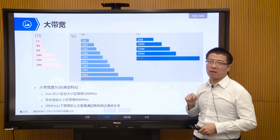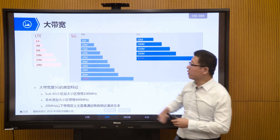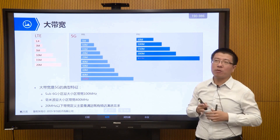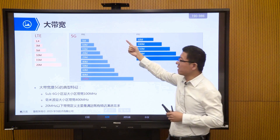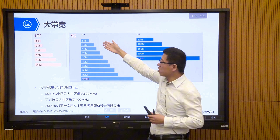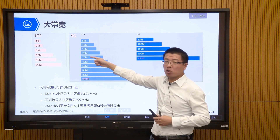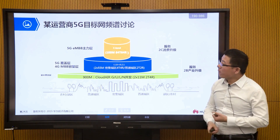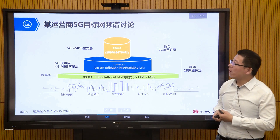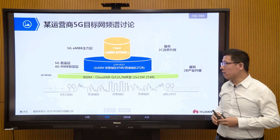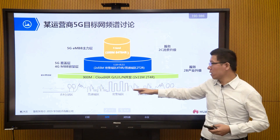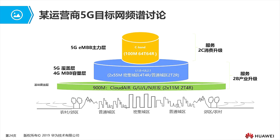In 5G, the smallest cell bandwidth is 5 MHz, because continuing to use 1.4 MHz or 3 MHz would result in very low speeds with little practical value. Those bandwidths have been removed. We kept 5 MHz, 10 MHz, 15 MHz, and 20 MHz to support future refarming of 4G spectral resources. For example, using 900 MHz for basic coverage ensures a base layer of connectivity in rural, urban, and dense urban areas — providing 5G signal access anytime, anywhere.